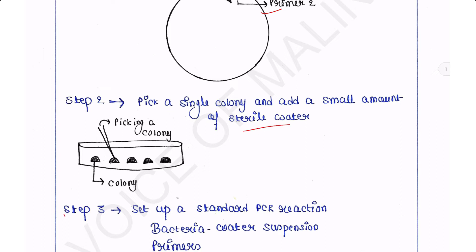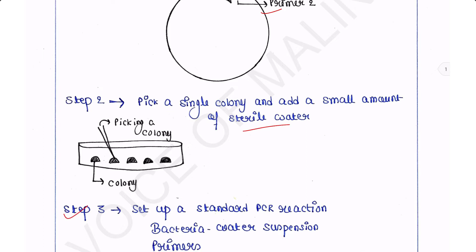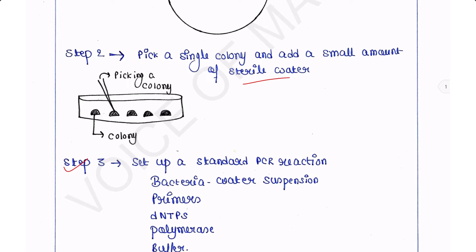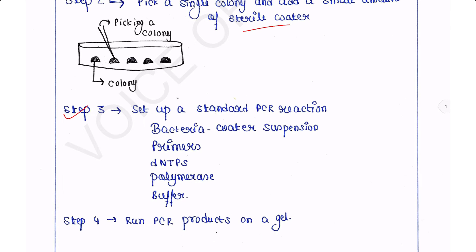Step 3: Set up a standard PCR reaction. Here we require the bacteria water suspension, primers, dNTPs, polymerase, and buffer. During the denaturation step of PCR,